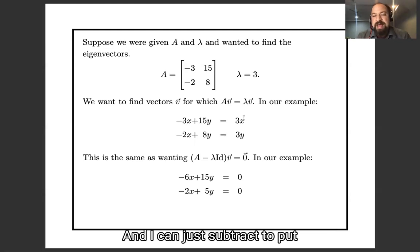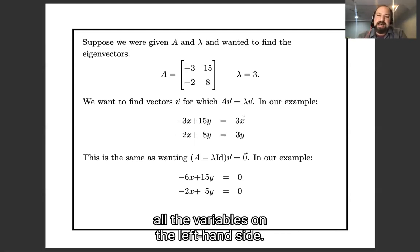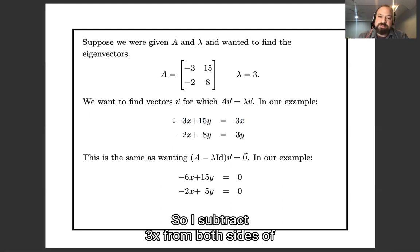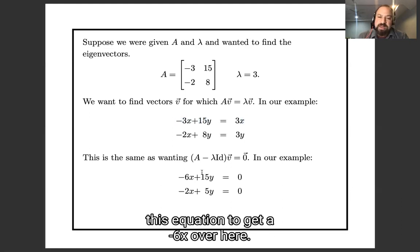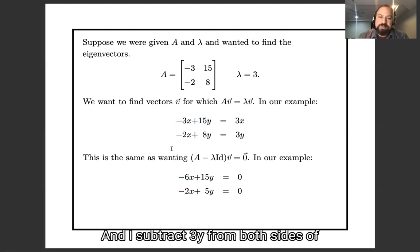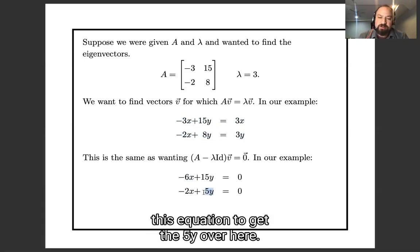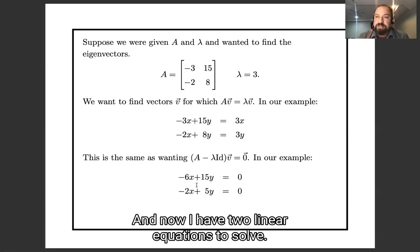And I can just subtract to put all the variables on the left hand side. So I subtract 3x from both sides of this equation to get a minus 6x over here. And I subtract 3y from both sides of this equation to get a 5y over here. And now I have two linear equations to solve.